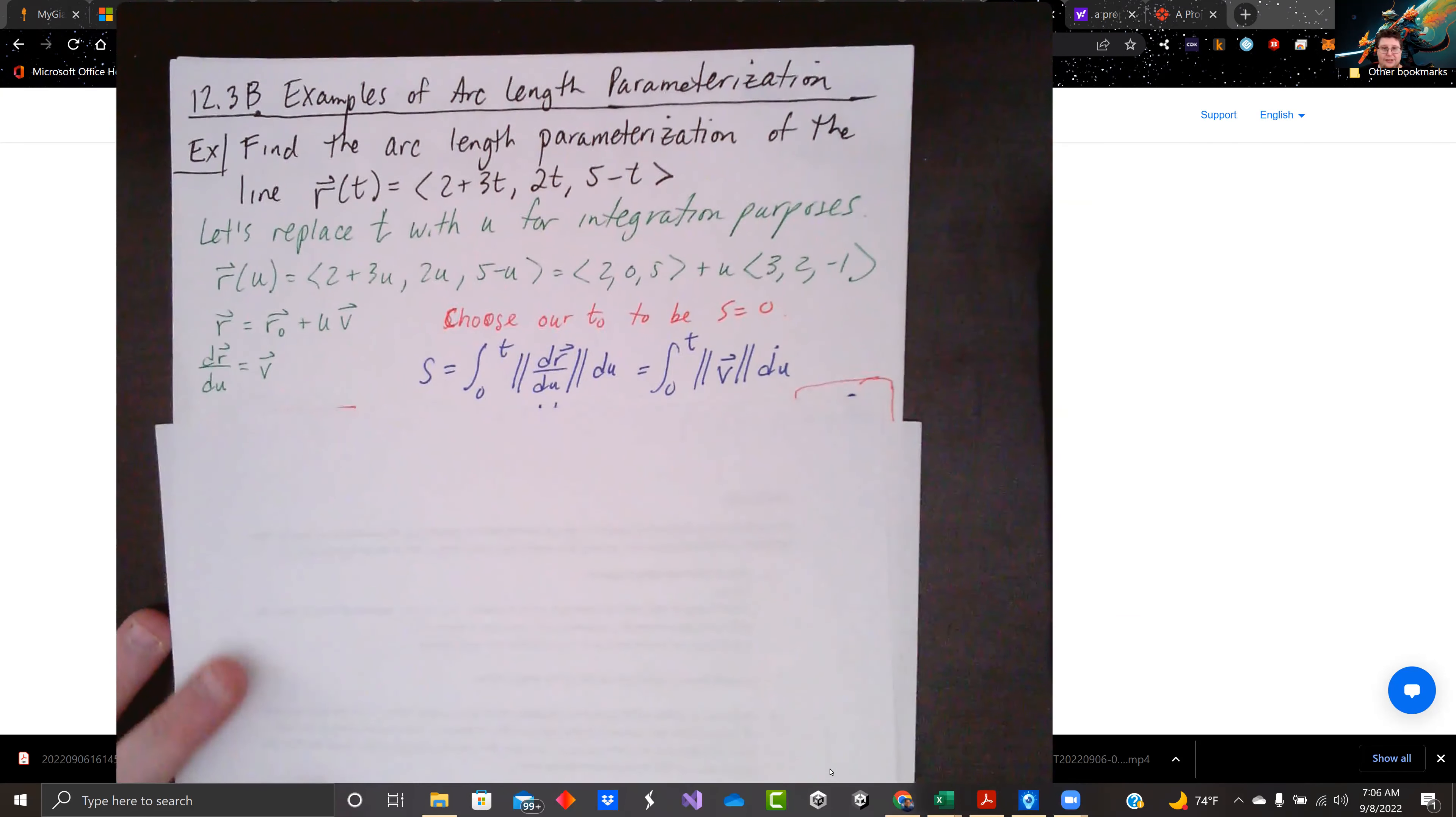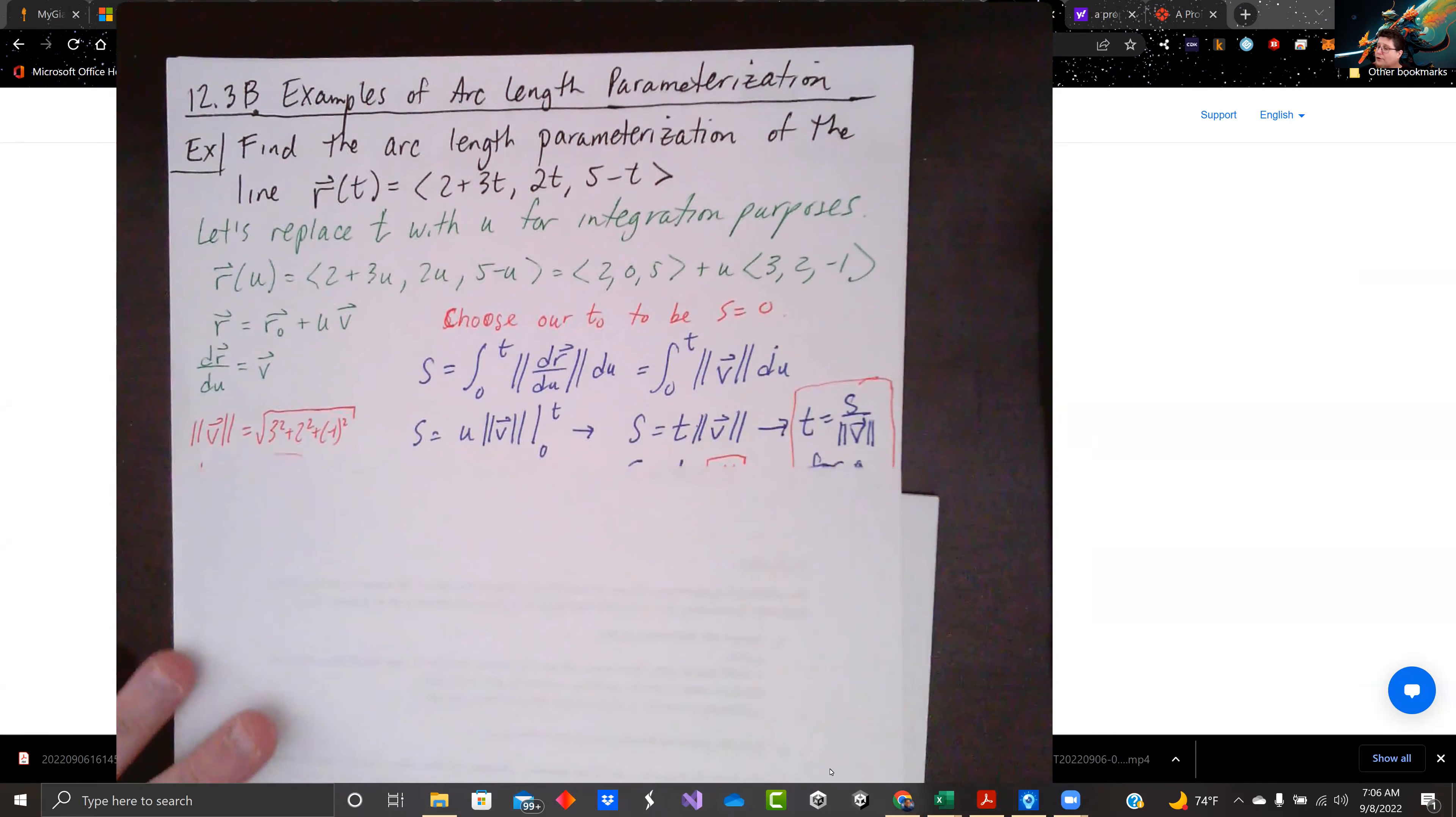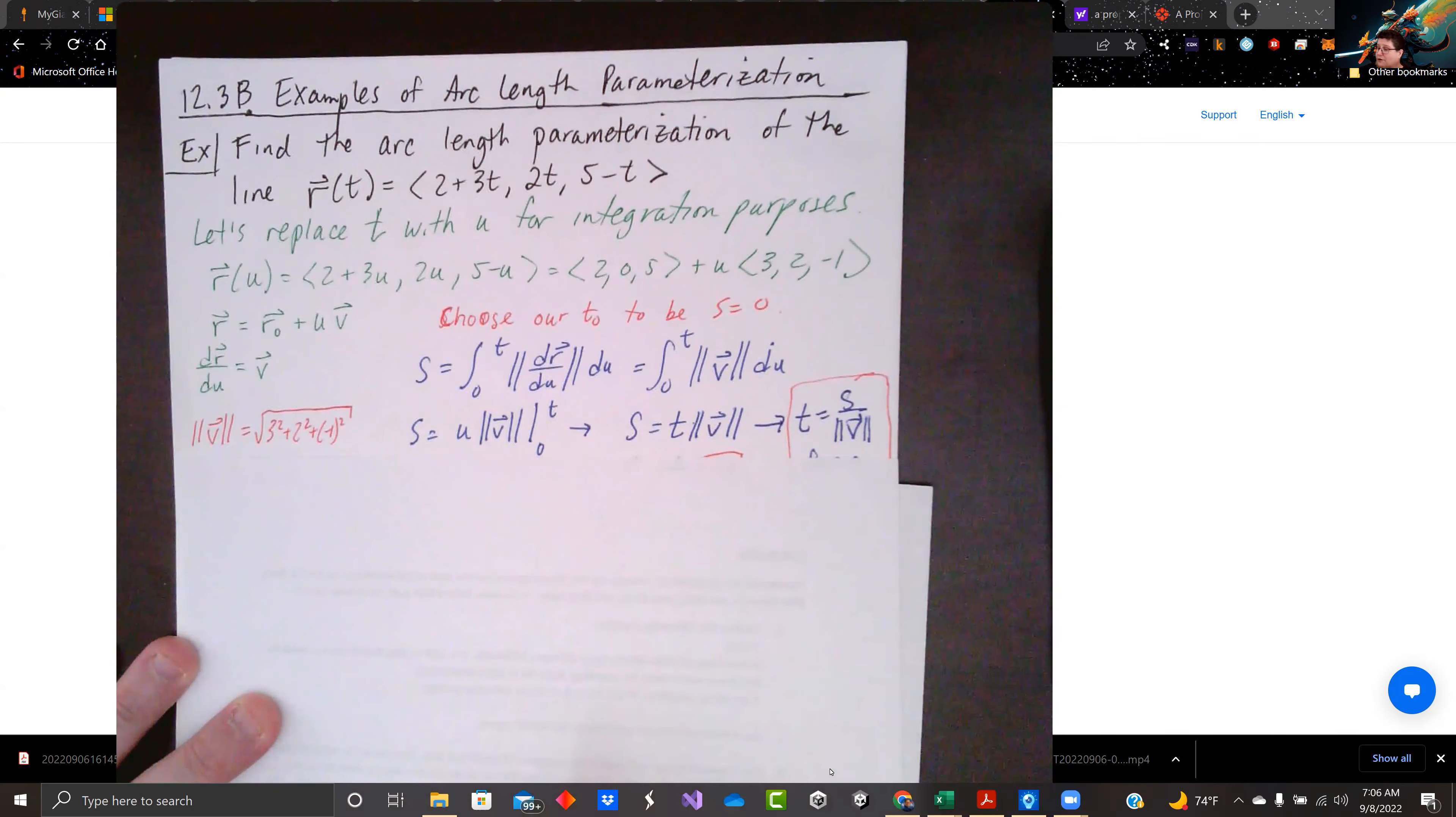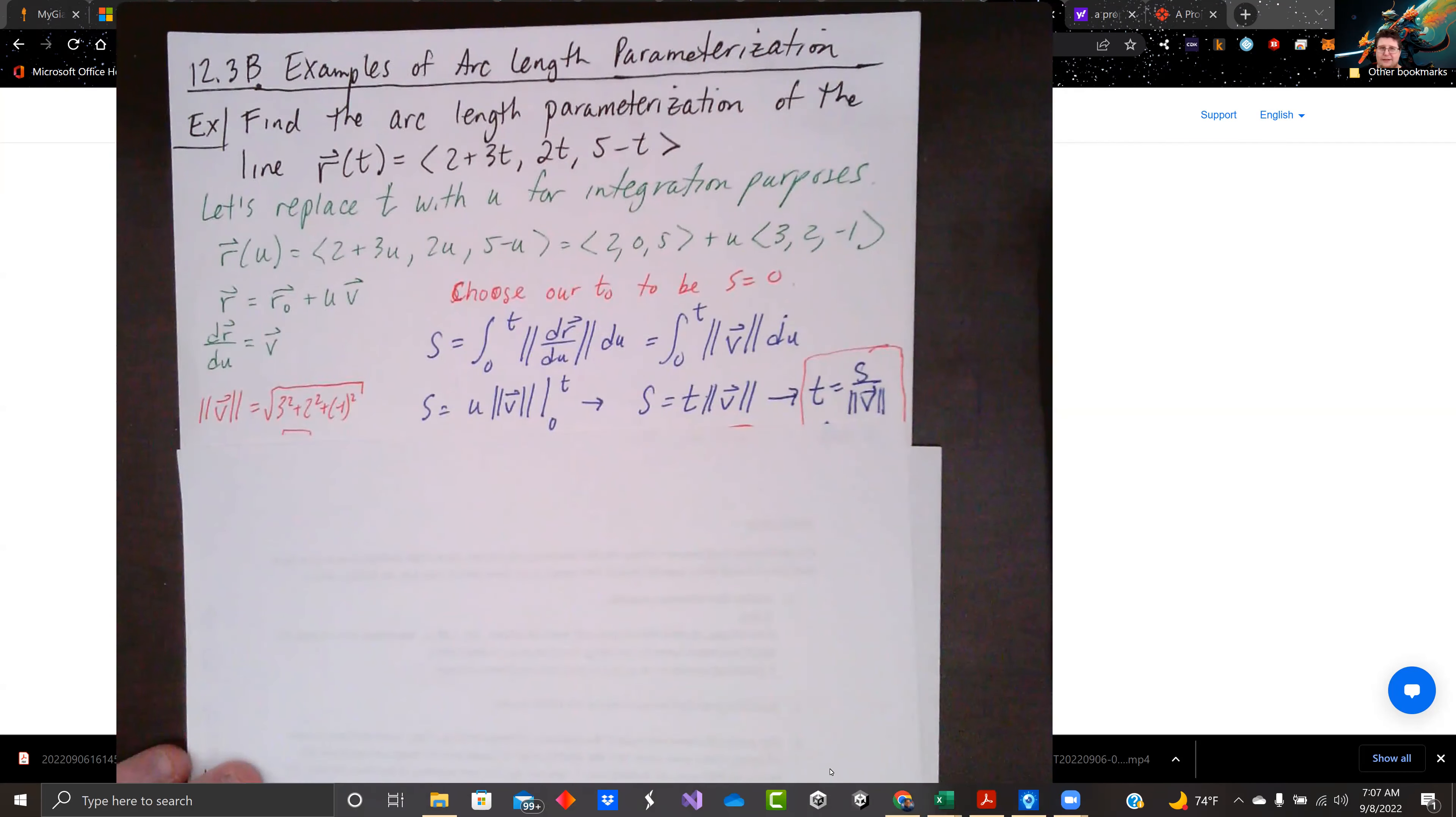So an arc length parameterization is going to have 0 to t for arc length for a line. And when I go through it, normally we integrate that. We get u, because we're doing, remember, u's the dummy variable. We've got u times the magnitude of v from 0 to t. s equals t magnitude v. So for a straight line, t equals s over the magnitude of v is the substitution we're going to make. This is only for straight lines, not curves. Curves are going to be different. But the straight line is going to have that v as the derivative every time.